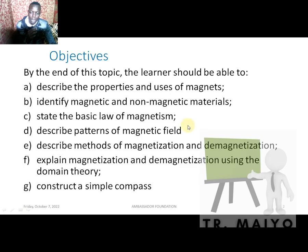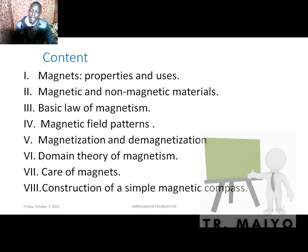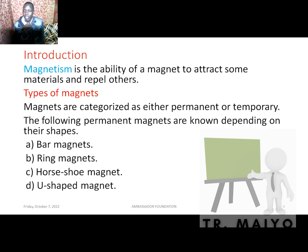Further objectives include: describe methods of magnetization and demagnetization, explain magnetization and demagnetization using the domain theory, and construct a simple compass. The content will cover magnetic field patterns, magnetization and demagnetization, domain theory of magnetism, care of magnets, and construction of a simple magnetic compass — which is not a difficult thing.